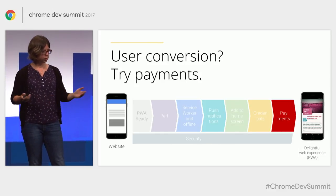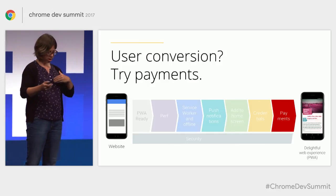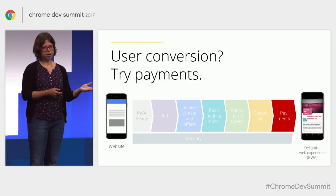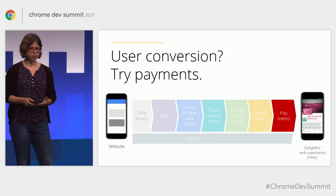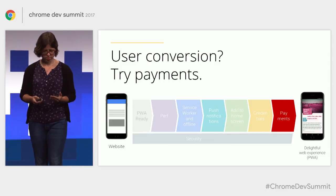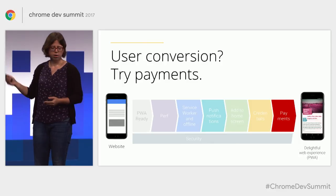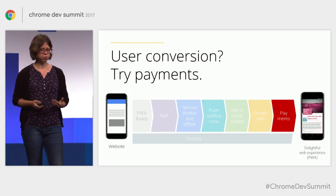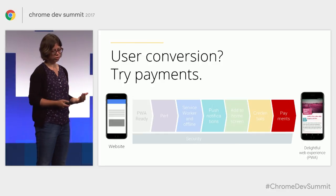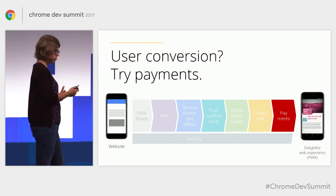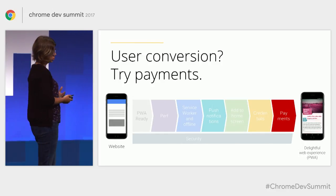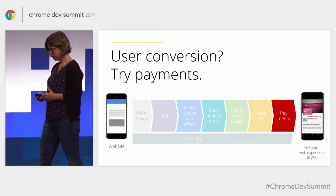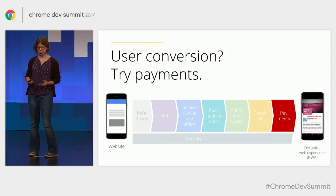If you care about user retention most, that's where the important part for your business is — maybe you should focus on add-to-home-screen feature and notifications. This way, the app will be integrated better with users' devices, and it will be easier to bring them back and turn them into a returning customer from an occasional one. If you care about user conversion, maybe your bottleneck is on payments, and maybe if you try the Payments API, that's where you can bring most value. So a lot of progressive web app features are modular, and you should make sure to always coordinate with your stakeholders to choose the best line of action for your business and then iterate as necessary.